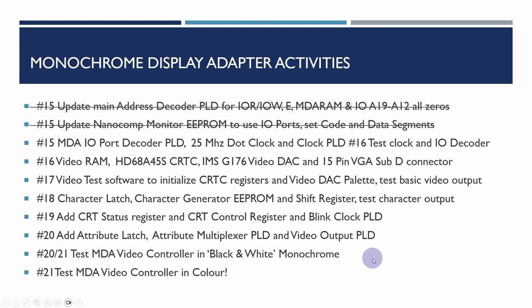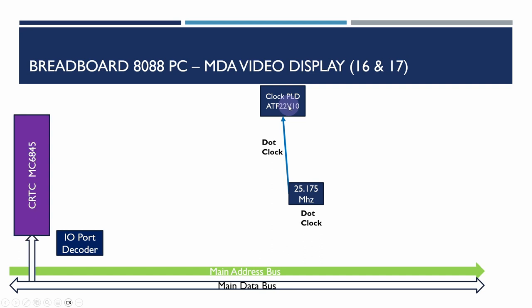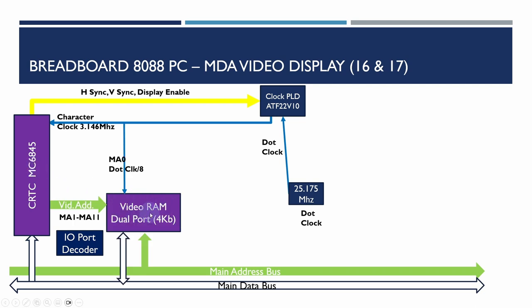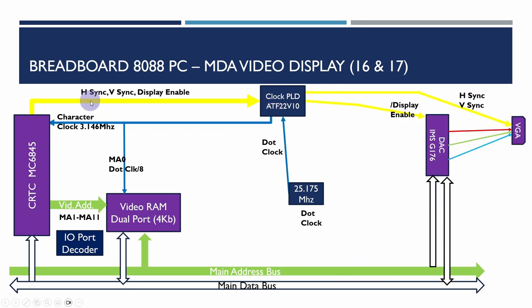These are how the activities break down across the videos. We're primarily covering the initial design from videos 13 and 14, then going through the build phases for 15 through 21. In the first couple of videos we're adding the IO port decoder, the 25 MHz dot clock, and the clock PLD that provides timing signals. Then we added the cathode-ray controller chip — the MC6845-compatible Hitachi device — which produces horizontal sync, vertical sync, and display enable signals. The character clock is the dot clock divided by eight.